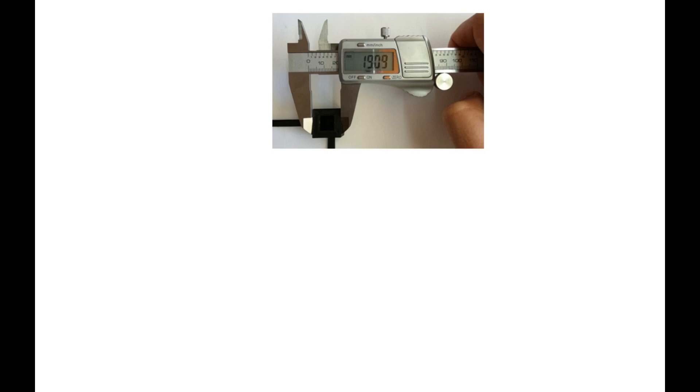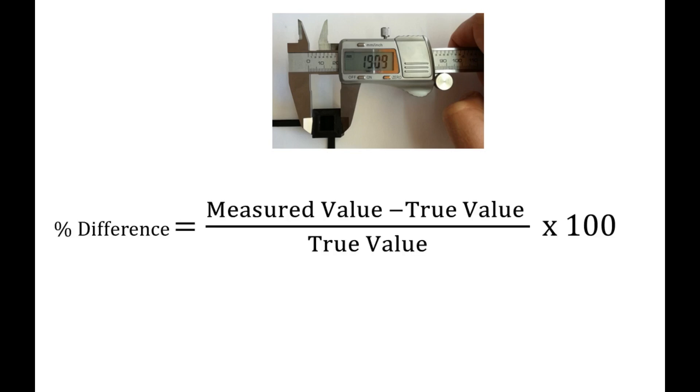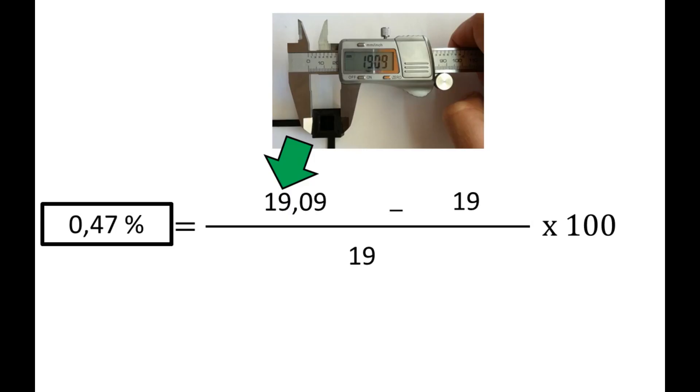The next step is to measure dimensions of each cube and calculate percent error. The true value is the one indicated in CAD drawing. If we insert the values, we get our percent error. If the part is, for example, larger than its nominal dimensions, the result will be a positive number.